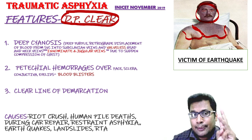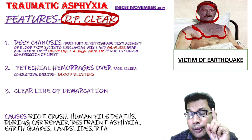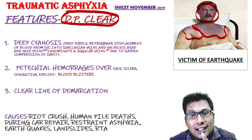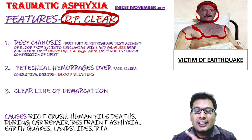Please remember the mnemonic: DP-CLEAR. D for deep cyanosis, P for petechial hemorrhages, and CLEAR for clear line of demarcation. This can be asked in upcoming exams.